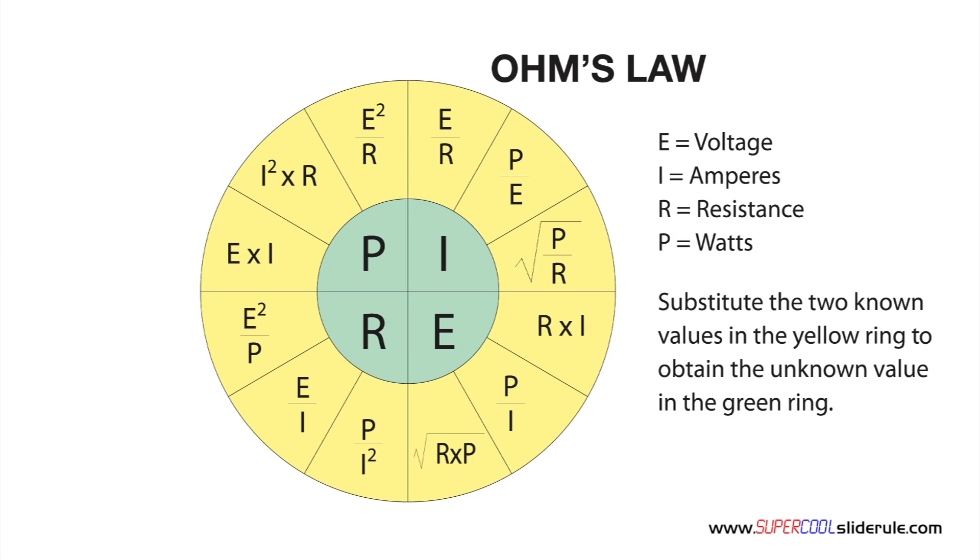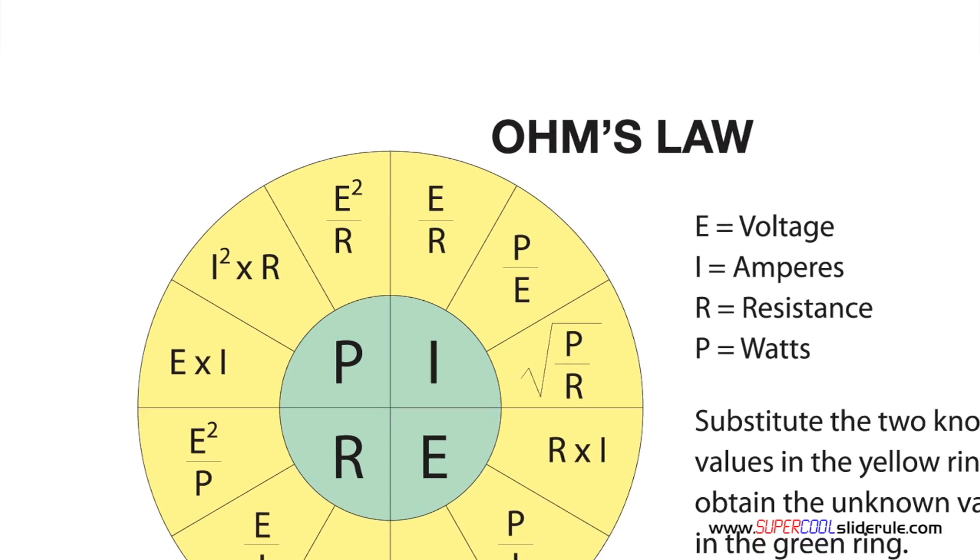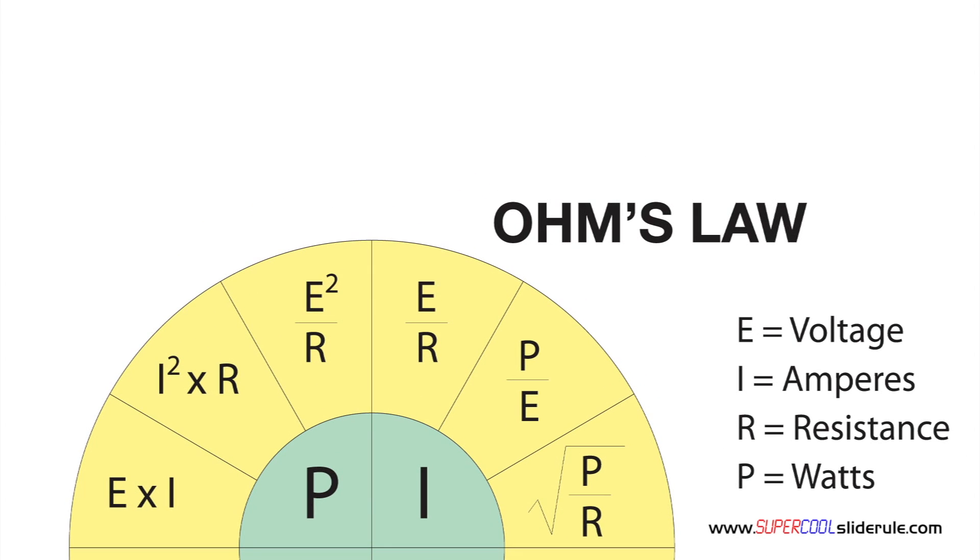In this tutorial, we will learn how to convert amps and resistance to watts using the Ohm's law wheel. If you have a super cool slide rule, get it out and turn it to the back. We will be using this equation here.